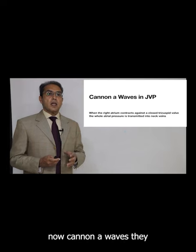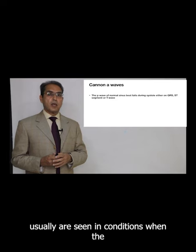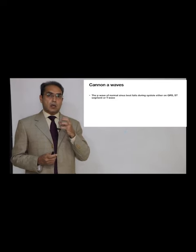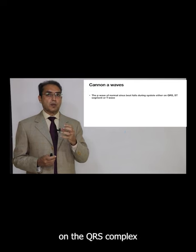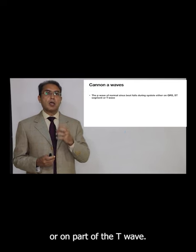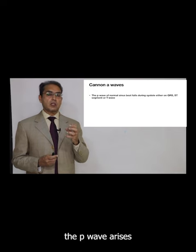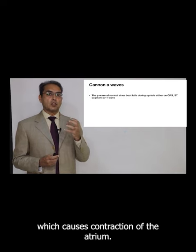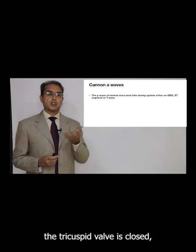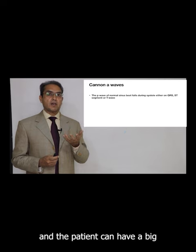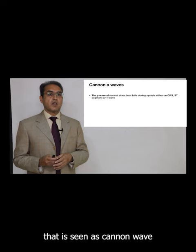Canon A waves are usually seen in conditions when the P wave falls on the QRS complex, or on the ST segment, or on part of the T wave. That means during ventricular systole a P wave arises which causes contraction of the atrium. So the ventricle is already contracting, the tricuspid valve is closed, and the patient can have a big surge of wave in the neck that is seen as a Canon wave.